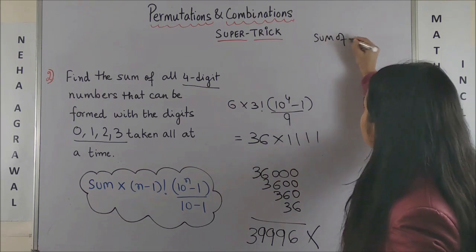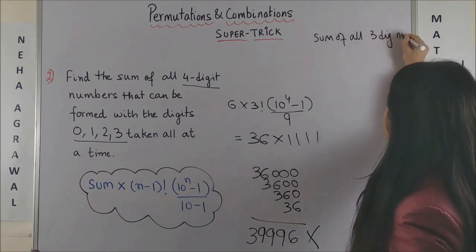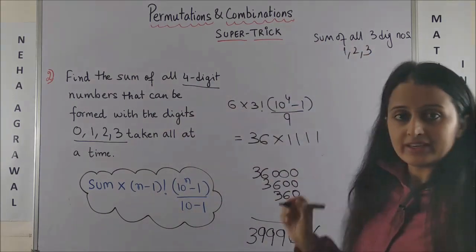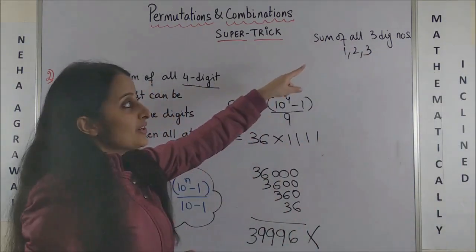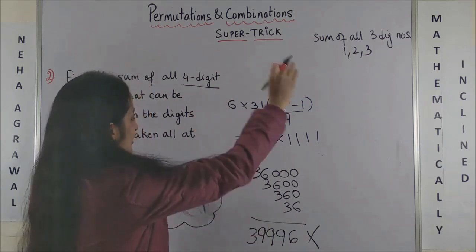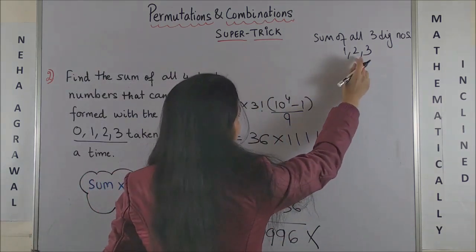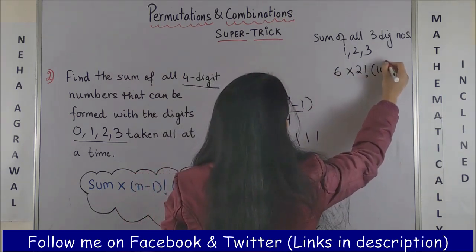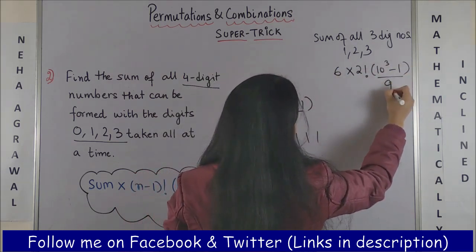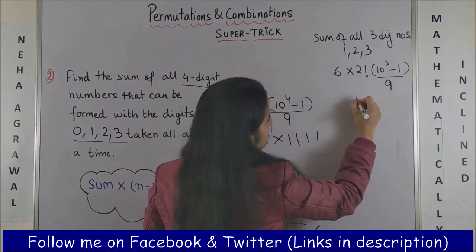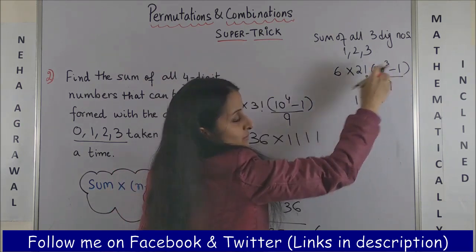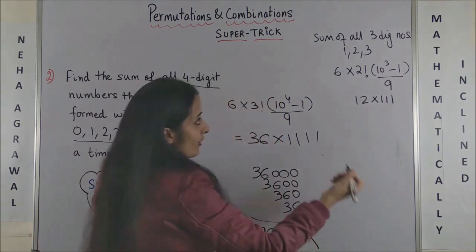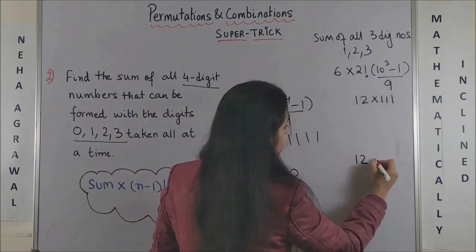Is it not the same as saying sum of all three-digit numbers where 0 is excluded and you just have 1, 2, 3? Yes. So using the same formula, this should give us 6 into 2 factorial, 10 cube minus 1 upon 10 minus 1. So this gives us 12 into 999 by 9. Or in other words, you can say it is going to be 1,200, 120, and 12.